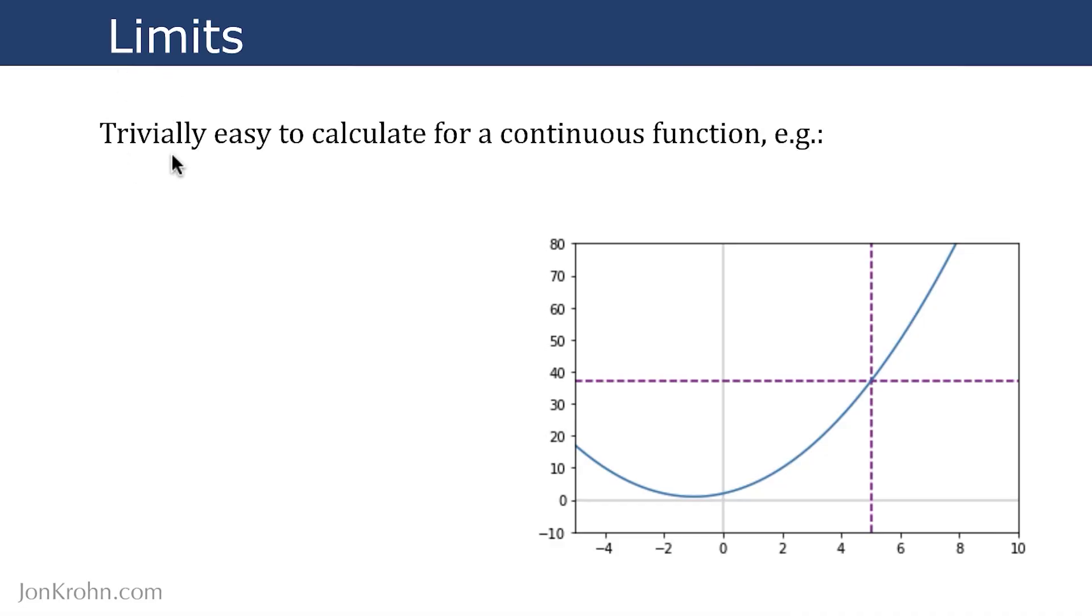Limits are trivially easy to calculate for a continuous function. Here is a continuous function - the relationship between x and y is a smooth curve everywhere along the curve. There are no sudden step changes where the value jumps from one place to another. There's no place along the curve where we can't compute the relationship between x and y. For every value of x, there is a value of y.